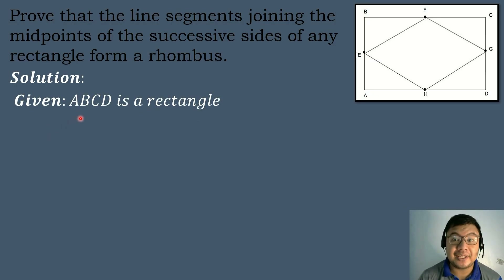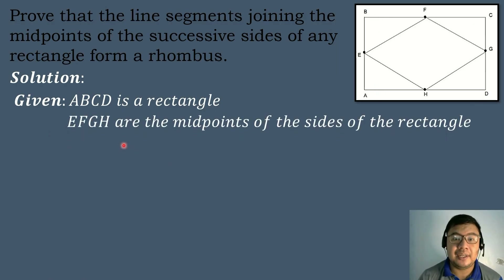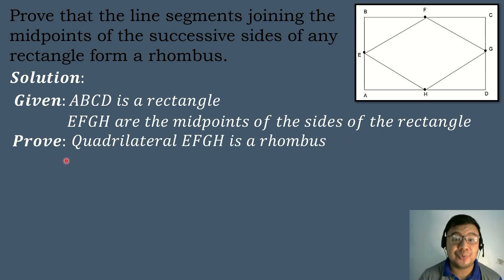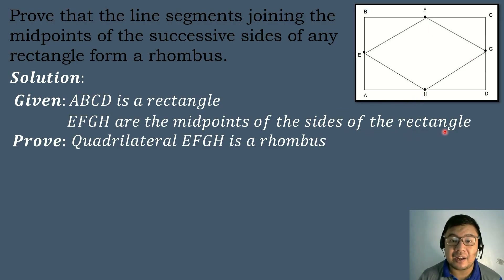Given: quadrilateral ABCD is a rectangle, and E, F, G, H are the midpoints of the sides of the rectangle. We have to prove that quadrilateral EFGH, which are the midpoints of the sides of the rectangle, is also a rhombus.